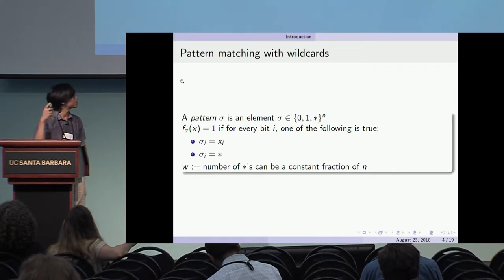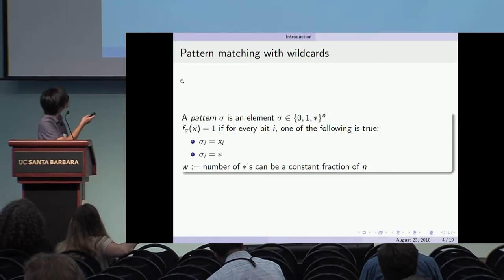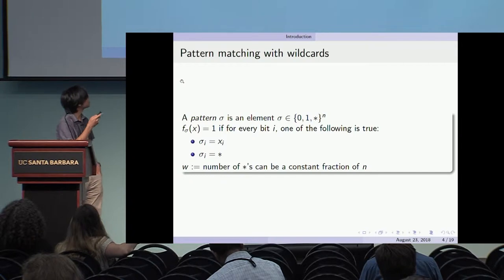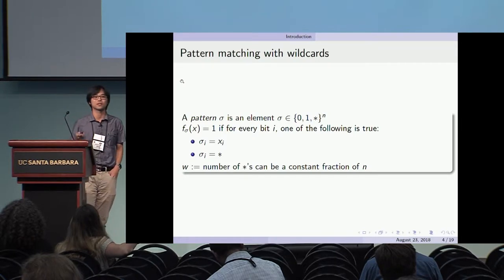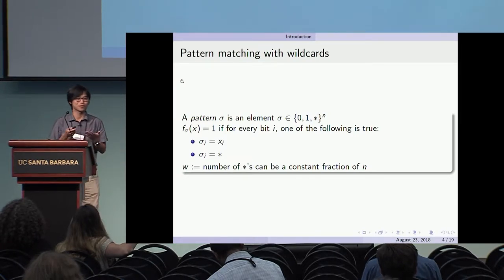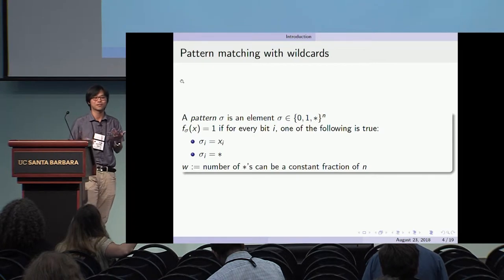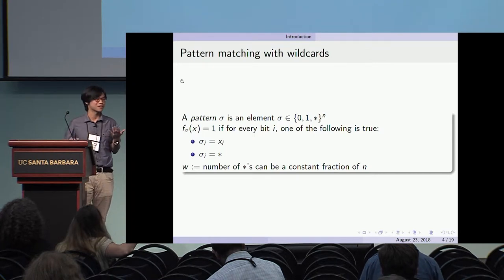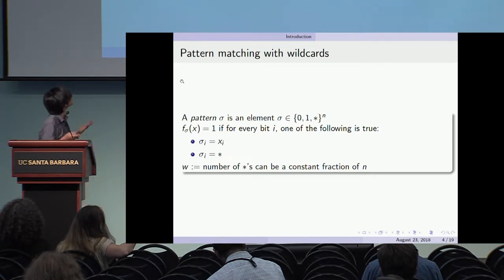Importantly, we want W — the number of wildcards — to be large, to be a constant fraction. If W was small, then this would just be a union of point functions, and this wouldn't be an interesting result.